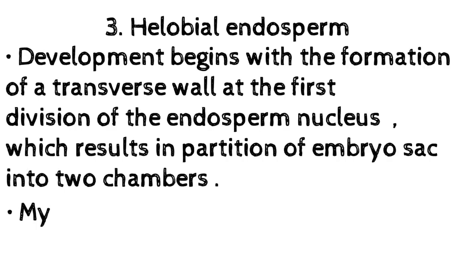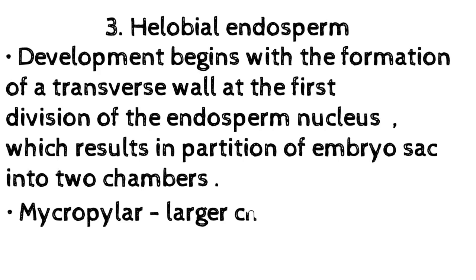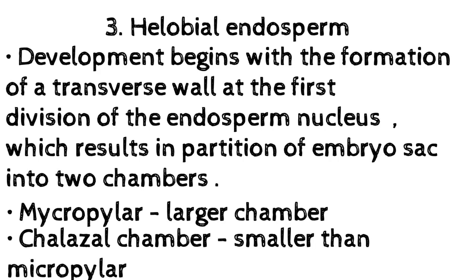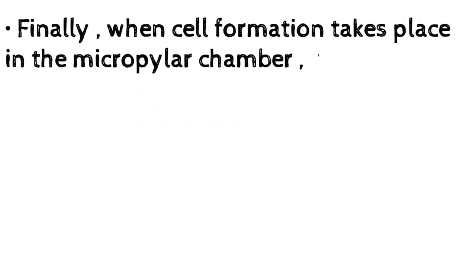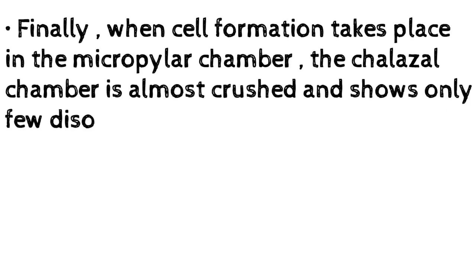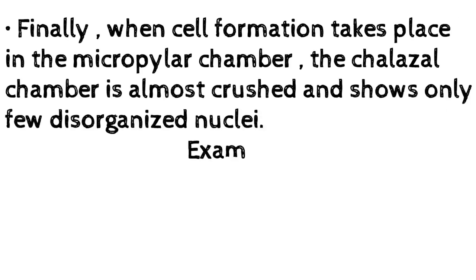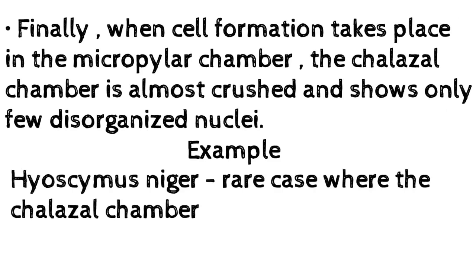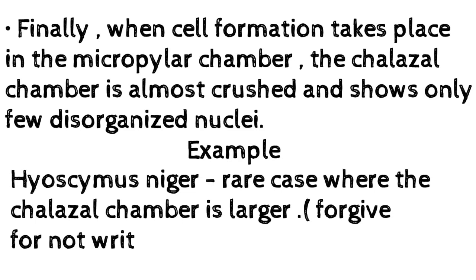Third type: Helobial endosperm. Development begins with the formation of a transverse wall at the first division of the endosperm nucleus, creating a micropylar chamber (larger) and a chalazal chamber (smaller than micropylar). Finally, when cell formation takes place in the micropylar chamber, the chalazal chamber is almost crushed and shows only a few disorganized nuclei. Example: Hyacinthus. A rare case where the chalazal chamber is larger is seen in Nigella.